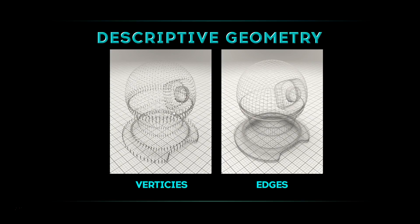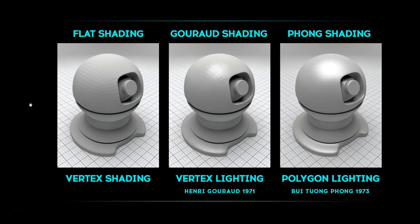The first thing in computer graphics was calculating vertices. Then the next step was connecting those vertices with edges, and after that they started creating surfaces from those edges — and that's where our polygons come from. The first surfacing algorithms they created were referred to as flat shading.